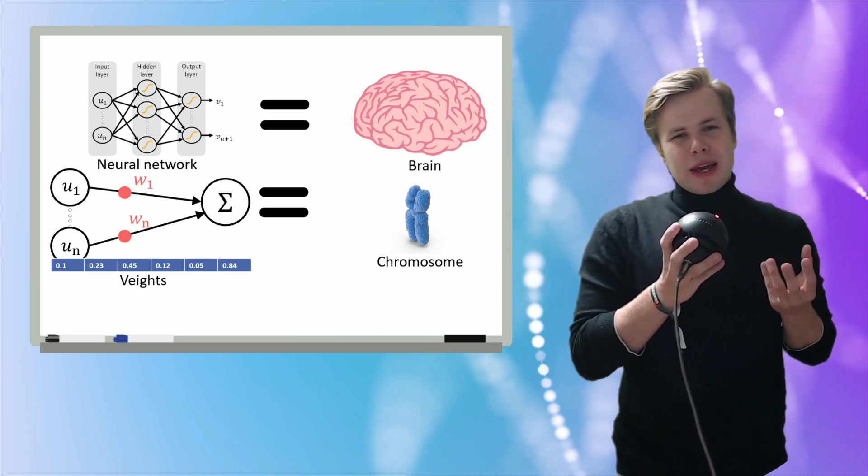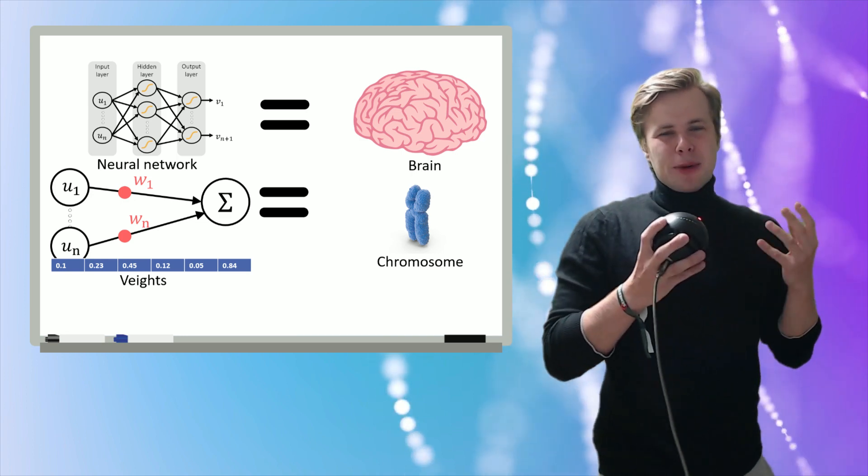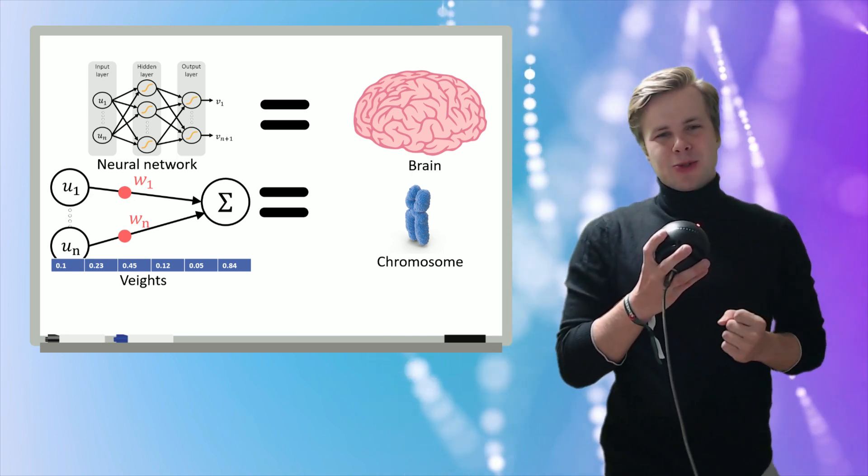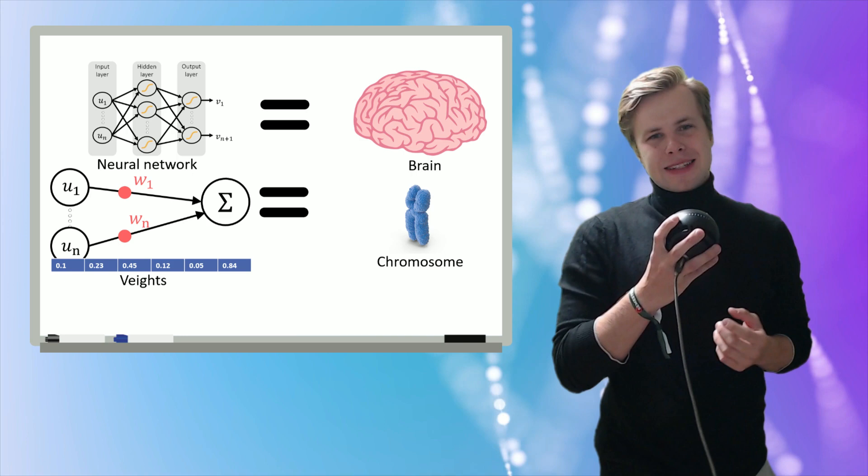And that is what we are interested in finding. We're going to combine and mutate this chromosome to find the absolute best weights and biases we can to complete this task. So now let's go through the steps of actually doing this.